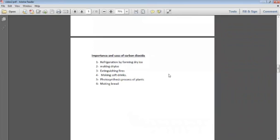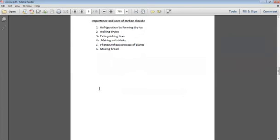Now, importance and uses of carbon dioxide. We use it in the refrigeration by forming dry ice. Extinguishing fires, we said that before. Making soda drinks. Photosynthesis, of course, needs the carbon dioxide, since the process of photosynthesis is about taking the carbon dioxide and making oxygen, or giving out oxygen. And making of bread to make it porous and tasty.